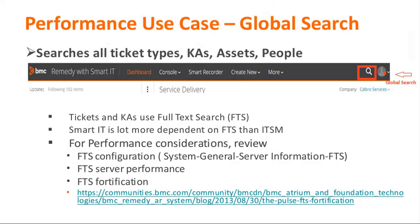Performance use cases. Global search is one of the common functionalities used in Smart IT. It is used for searching all types of tickets, knowledge articles, assets, and people. When you type in a string, it returns tickets — change requests, incidents, work orders, service requests — and it also returns knowledge articles, people, and assets. For tickets and knowledge articles, the full-text search capability of AR system is used, referred to as FTS.